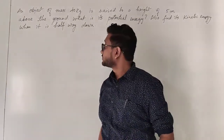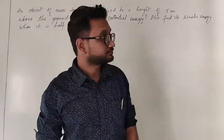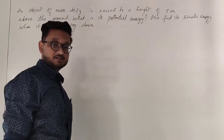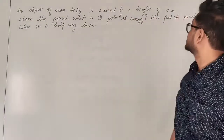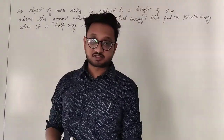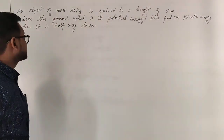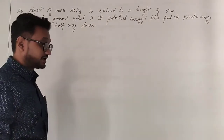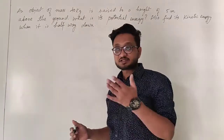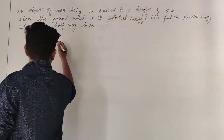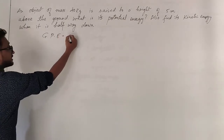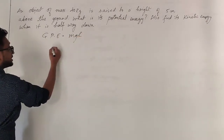Let's move on to the next numerical. An object of mass 40 kg is raised to a height of 5 meters above the ground. What is its potential energy? Also find its kinetic energy when it is halfway down. First, you are supposed to find its potential energy because it is kept at a certain height, and we know the formula for that: gravitational potential energy equals mgh.